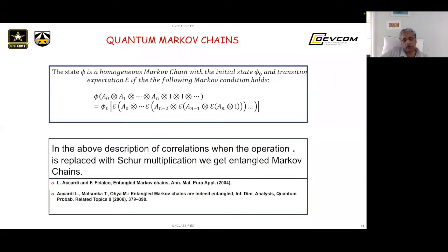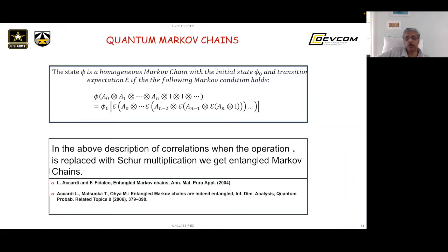A classical Markov chain can be thought of as a correlation between random variables — as the chain evolves, each state is a random variable, and you take a correlation of all those to define the state. To extend to the quantum side, replace random variables with operators and the product with the tensor product — building correlations using operators gives a quantum Markov chain. However, this construction is not very interesting because it's not entangled. If instead of a tensor product you use a Zoor product to build correlations, then you get an entangled Markov chain.